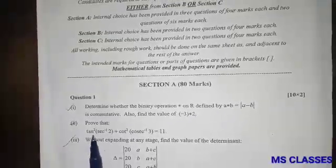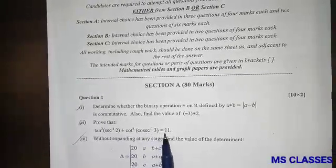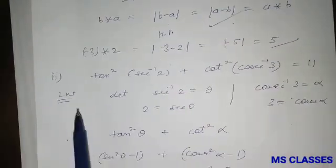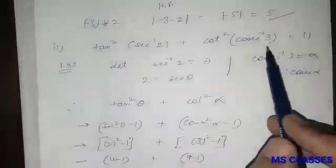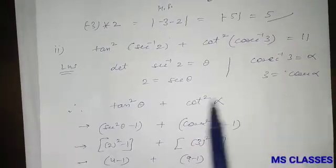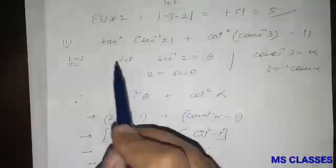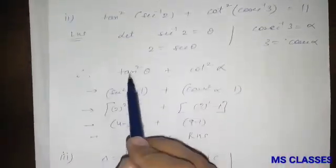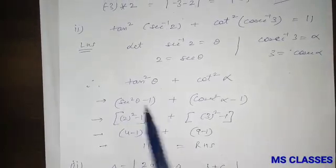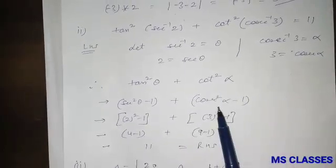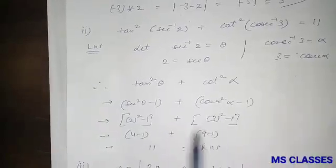Part two: prove that tan squared secant inverse 2 plus cot squared cosecant inverse 3 equals 11. Let secant inverse 2 be theta and cosecant inverse 3 be alpha, so secant theta is 2 and cosec alpha is 3. Putting these values, you get tan squared theta plus cot squared alpha, which is secant squared theta minus 1 plus cosec squared alpha minus 1. If you put the values, you get 11, which is our right-hand side. Hence proved.